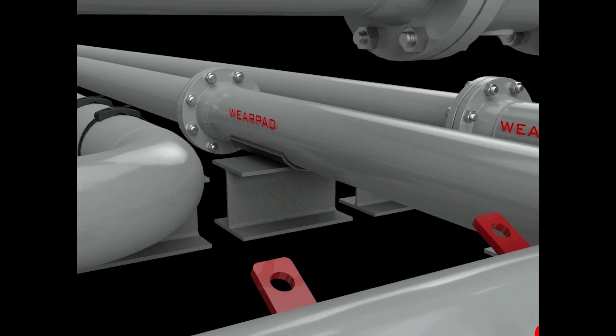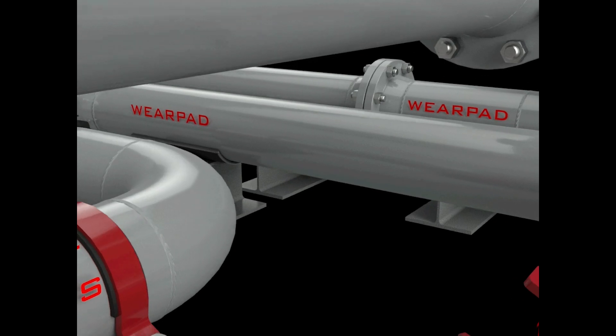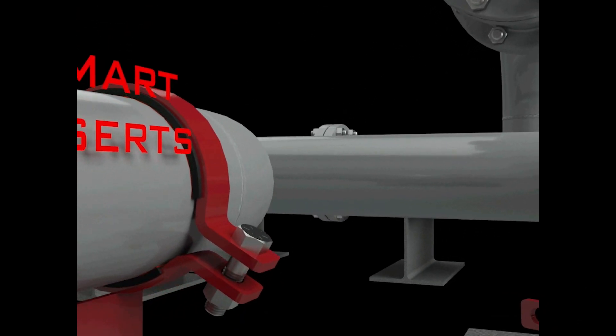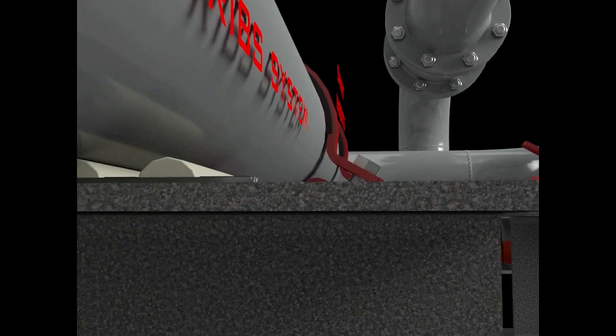Our leak prevention pipe supports are engineered with corrosion-resistant materials and innovative designs to eliminate corrosion and minimize stress on pipes, reducing the risk of leaks and failures.